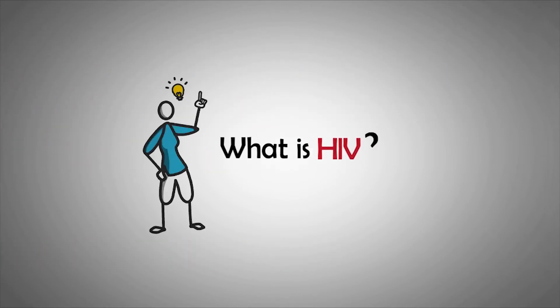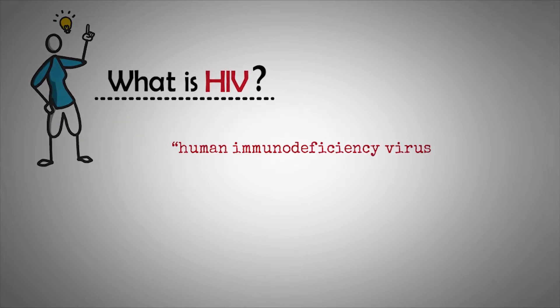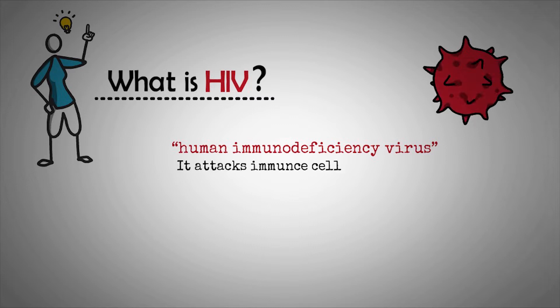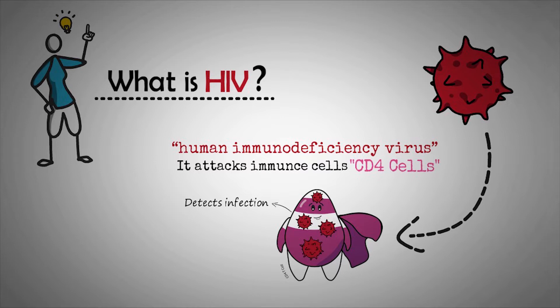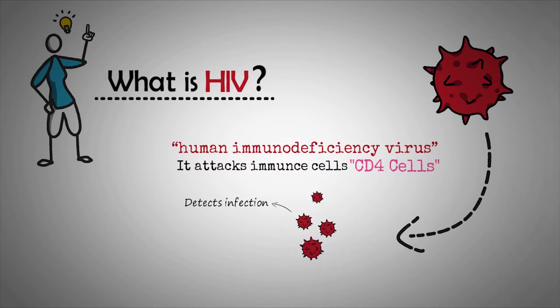HIV stands for human immunodeficiency virus, and it attacks immune cells called CD4 cells. These are types of T cells that circulate in the blood, detecting infections throughout the body and anomalies in other cells. HIV targets and infiltrates CD4 cells, using them to create more copies of the virus. In doing so, it destroys the cells and reduces the body's ability to combat other infections and diseases.